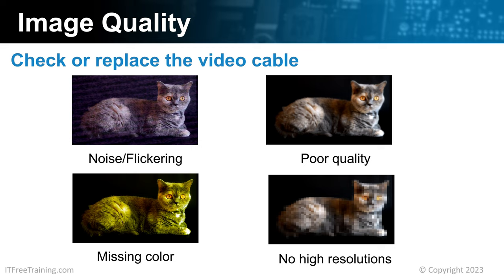When you purchase a cable, look at the packaging as it will tell you what resolutions that cable can support. Since we are moving towards data transmission using lanes, you probably won't get color problems at higher resolutions due to damaged pins. With older standards, different colors were transmitted using different wires, and if one pin was damaged or not connected, it would affect one of the colors in the signal. Nowadays, if you get noise in the image, it won't work at higher resolutions or features won't be available, such as higher color depth.